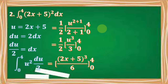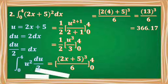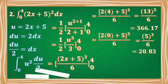Solving for the upper limit by replacing x by 4, we have the quantity 2 times 4 plus 5 cubed over 6. Since 2 times 4 plus 5 equals 13, we have 13 cubed over 6, which equals 366.17. For the lower limit, replacing x by 0, we get 2 times 0 plus 5 equals 5. So we have 5 cubed over 6, which equals 20.83.